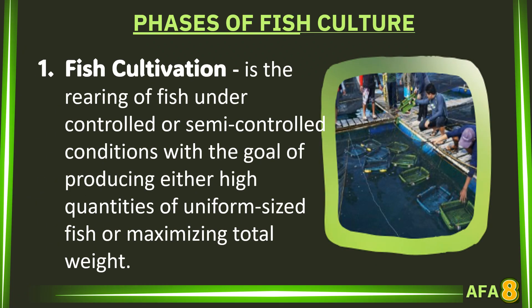The first phase of fish culture is fish cultivation — the rearing of fish under controlled or semi-controlled conditions with the goal of producing either high quantities of uniform-sized fish or maximizing total weight.